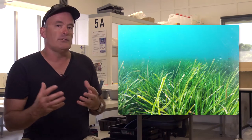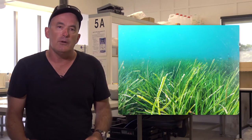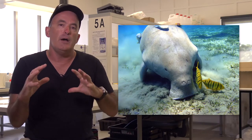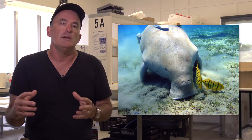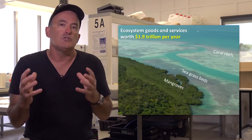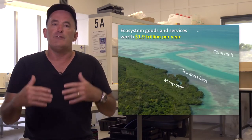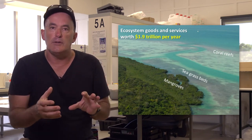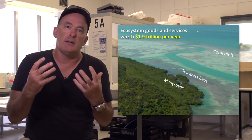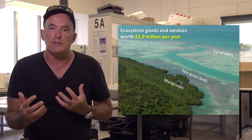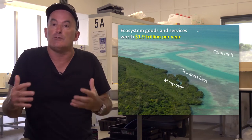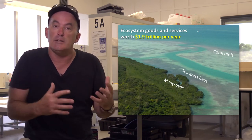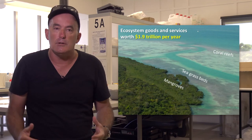Seagrasses are also important components of tropical coastal ecosystems and provide ecosystem goods and services that have recently been estimated at $1.9 trillion per year in the form of nutrient recycling, primary productivity, habitat for thousands of fish and bird species, and as a major food source for endangered manatee, dugong and green turtles.